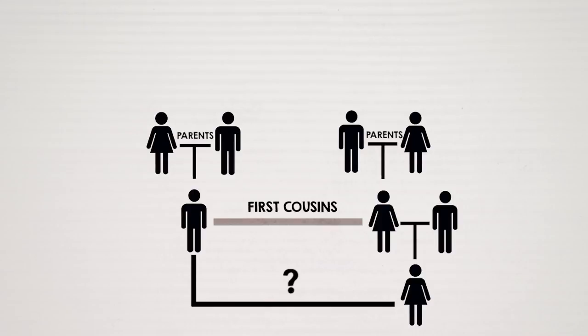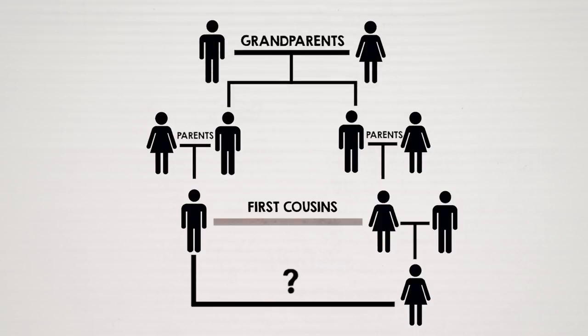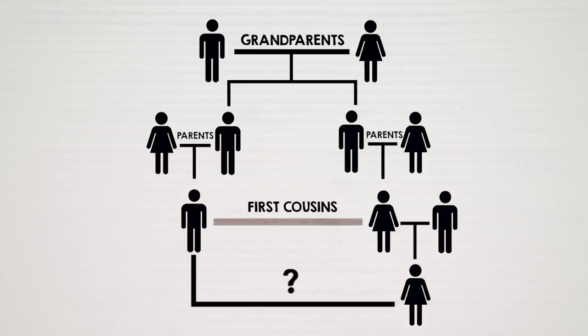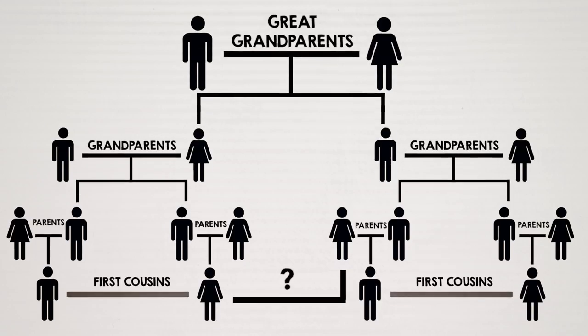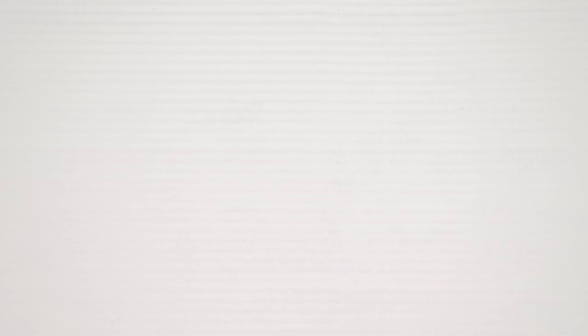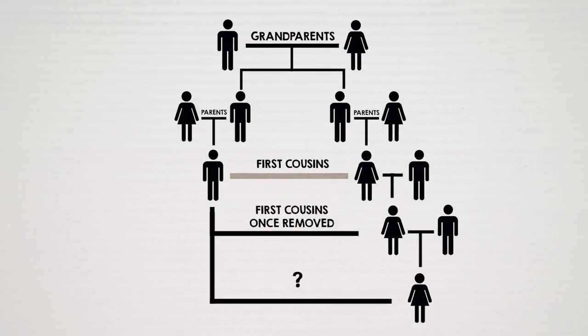The term 'removed' refers to the number of generations between cousins themselves, though the closest common ancestor is still the same. For example, your mother's first cousin: your closest common ancestor is your grandparents, but there's a gap of one generation between the two of you, making them your first cousin once removed. The child of your second cousin would be your second cousin once removed, and the grandchild of your first cousin would be your first cousin twice removed.